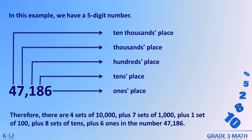Therefore, there are four sets of 10,000, plus seven sets of 1000, plus one set of 100, plus eight sets of tens, plus six ones in the number 47186.